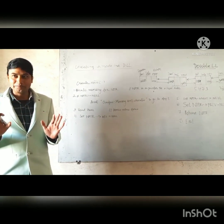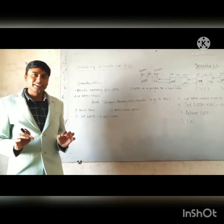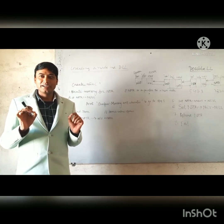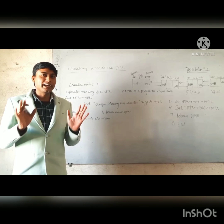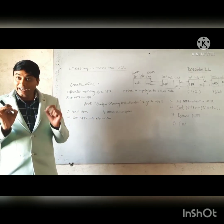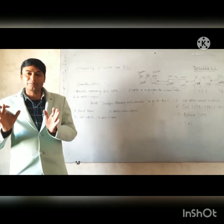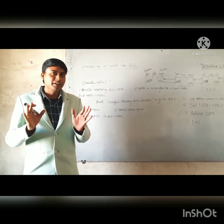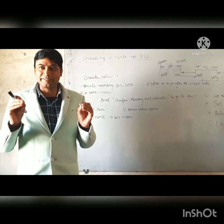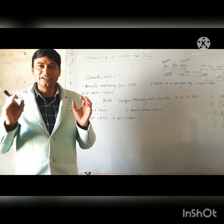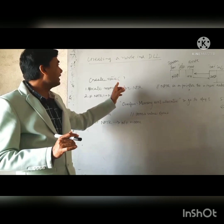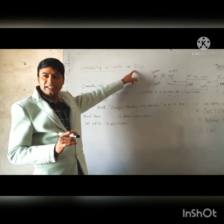Why is it dynamic? As I have talked about before, but again I am telling: in case of a linked list, we are able to add more number of nodes as per our need, and if we do not require more nodes or if we want to remove a node, we can delete that. It's a dynamic data structure. But today specifically, we will learn how to create a node in a double linked list.